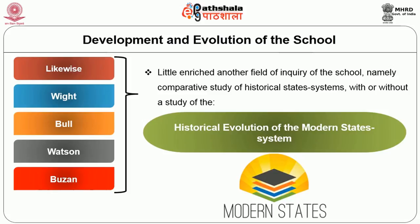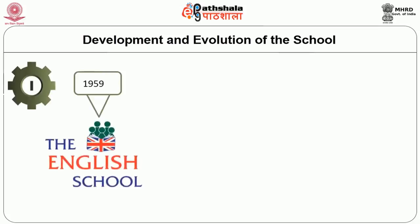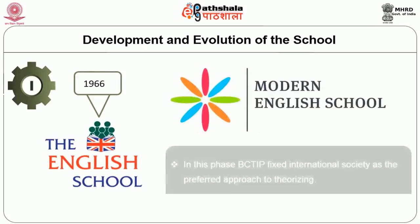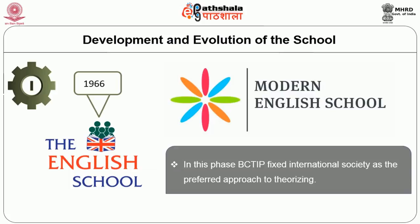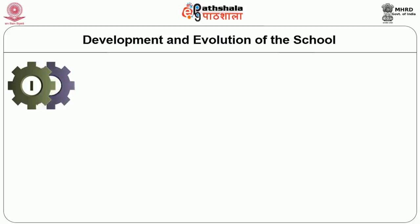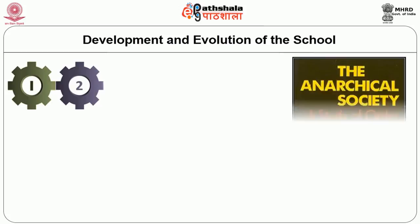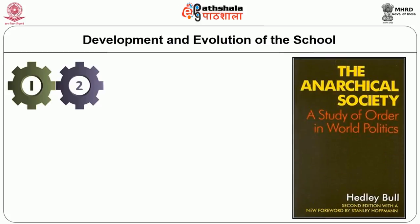While admitting that fixing the story of the English school into neat stages is difficult, Buzan accepts all of Waver's four-phase scheme setting out the main threads of its evolution. Phase one extends from 1959 to 1966. In this phase, BCTIP fixed international society as the preferred approach to theorizing. Phase two encompasses the period 1966 to 1977, witnessing the publication of Bull's Anarchical Society and White's Systems of States.